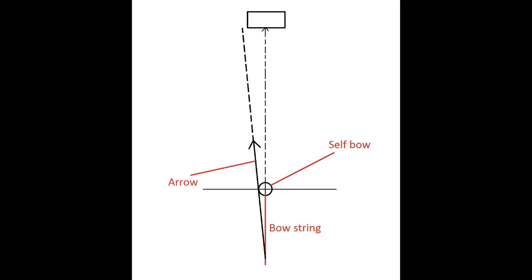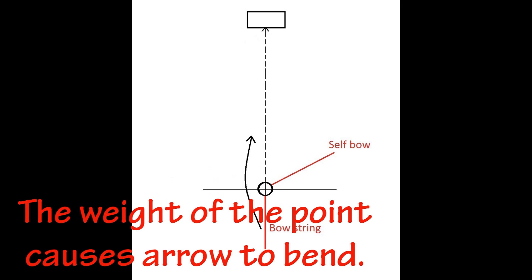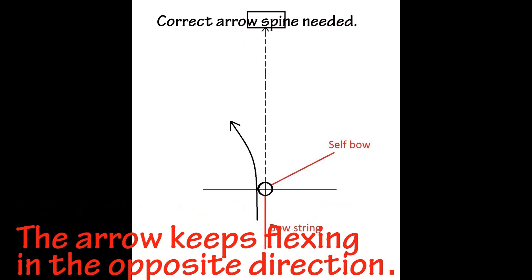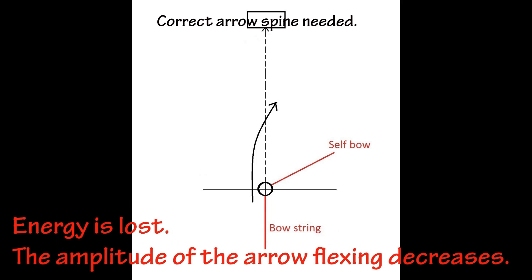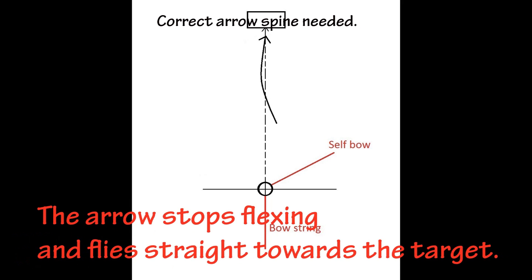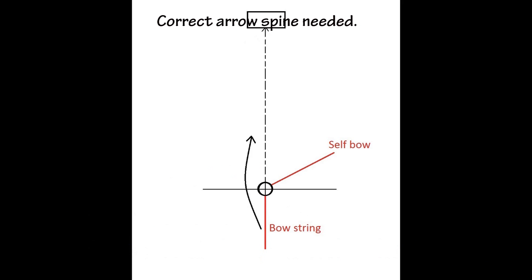Let's recap with diagrams from another angle. To achieve this, you're actually going to need the correct arrow spine according to the poundage of your bow, which we will talk about in another day.